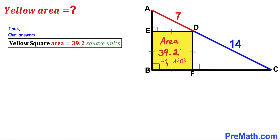So the area of yellow square BFDE turns out to be 39.2 square units, and that's our final answer. Thanks for watching, and please don't forget to subscribe to my channel for more exciting videos. Bye!